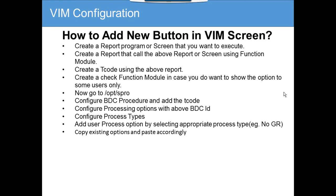After creating all these four things, you go to VIM configuration and do a process called 'Configure BDC Procedure' and add the T-code. The BDC procedure is a number that calls the T-code you have created. For example, if you want to do a goods receipt through MIGO with all the data pre-filled — like the delivery note, PO number, and movement type — once done, you add this T-code to the BDC procedure.